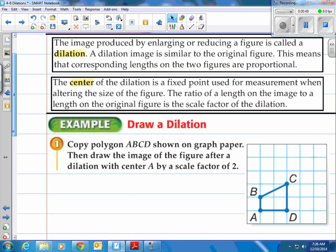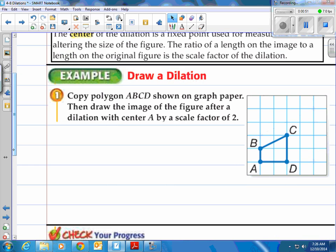We call the image the second picture that you draw so you can see right here we have ABCD we call that the original. The one we're gonna draw is called the image. So let's try one. Copy polygon ABCD shown on graph paper then draw the image of the figure after a dilation with center A by a scale factor of two. So we're gonna enlarge it by two or make it two times bigger.